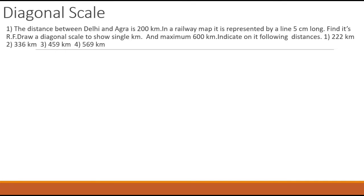Here we will discuss a problem on diagonal scales. The distance between Delhi and Agra is 200 kilometers, represented by a 5 centimeter long line on a railway map. Find its representative factor. Draw a diagonal scale to show single kilometers — that means hundreds of kilometers, tens of kilometers, and single kilometers — three different units. The maximum length is 600 kilometers. Indicate on it the distances 222, 336, 459, and 569 kilometers. In any given problem, the first step is to find the representative factor.